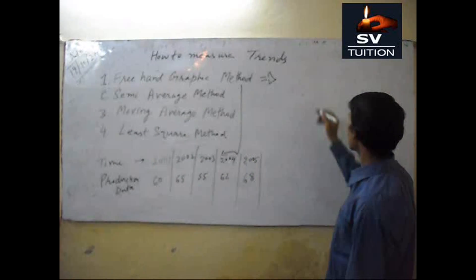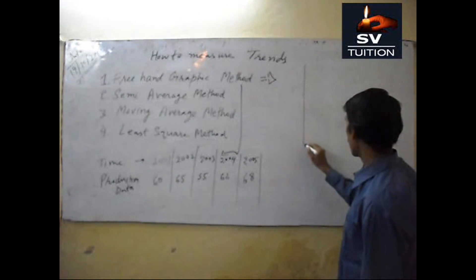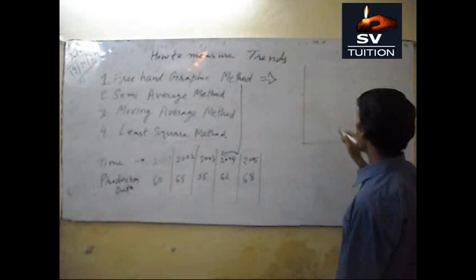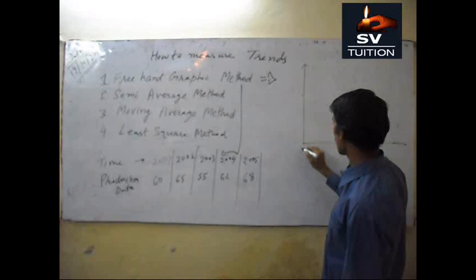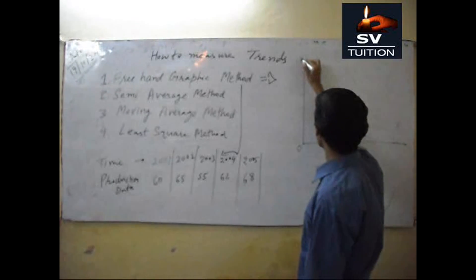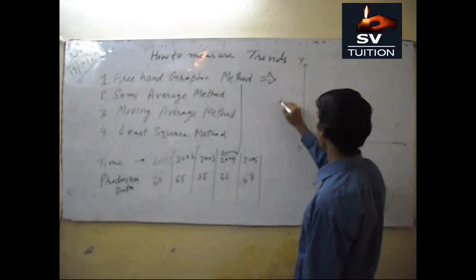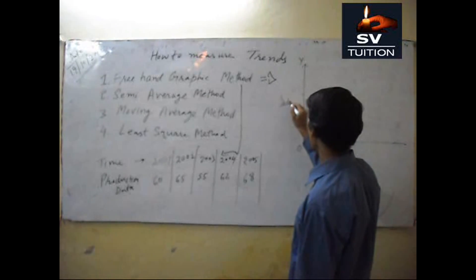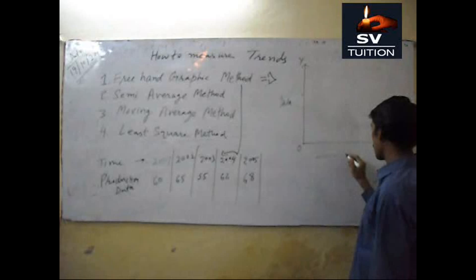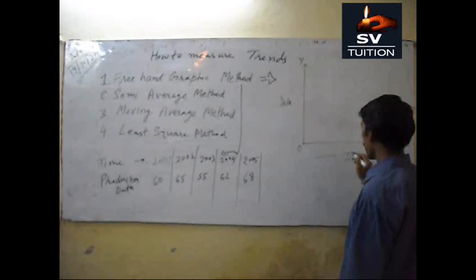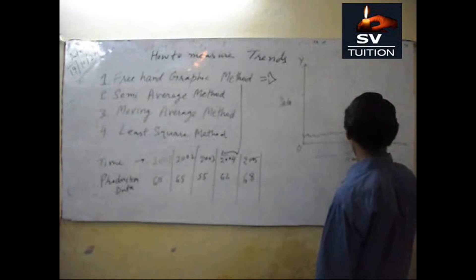So this is the graph paper. On y-axis, we will show the data. And x-axis will show time. This is a false baseline.